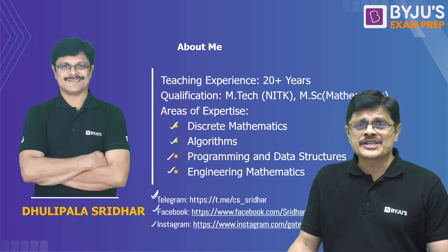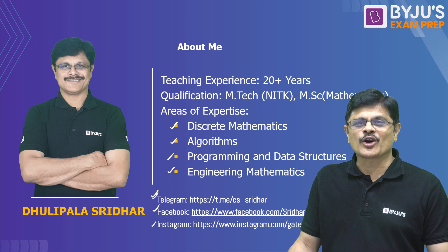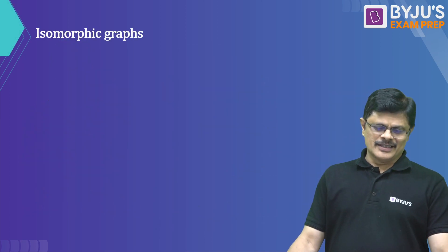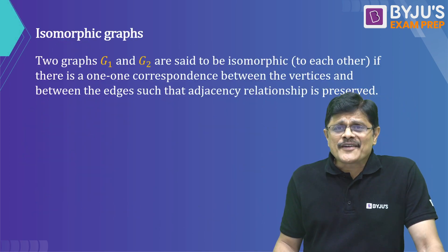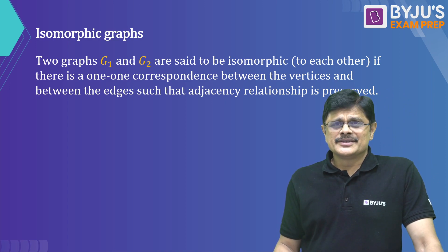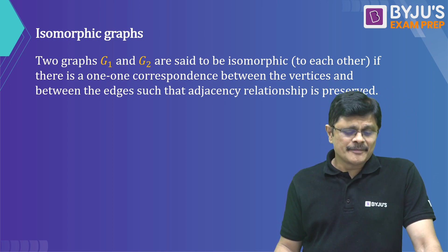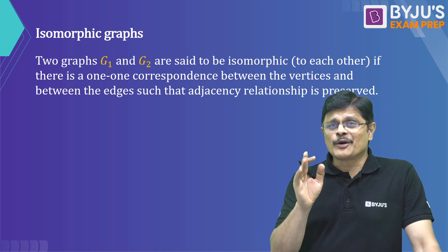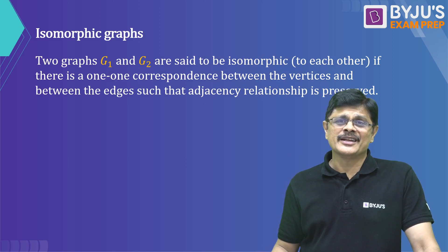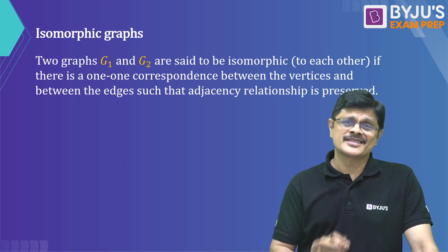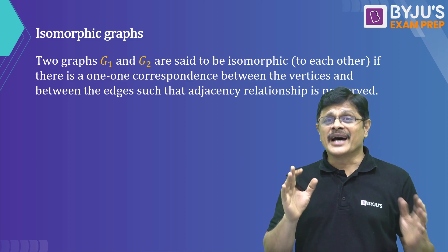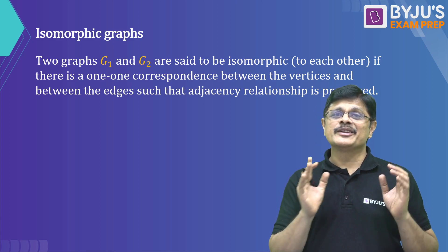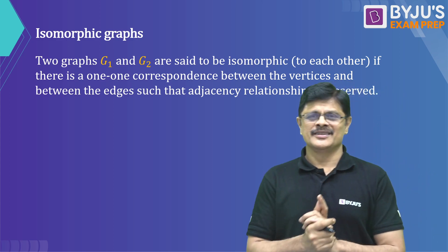So without wasting your time, let me start with the concept of isomorphism. Two graphs are said to be isomorphic if there is a one-to-one correspondence between their vertices, their edges, and the adjacency between the two graphs is maintained.